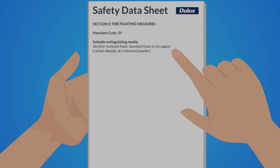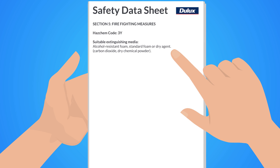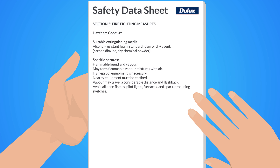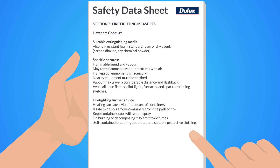Section 5 leads with the HAZ-CIM code and the suitable extinguishing media or fire extinguisher type. Next are the hazards that may start or exacerbate an existing fire. Finally, advice is provided to firefighters fighting a fire involving the substance covered by this SDS.